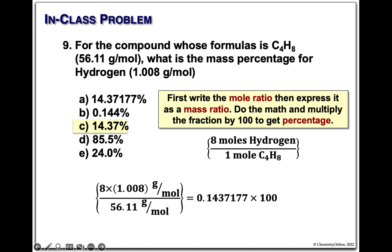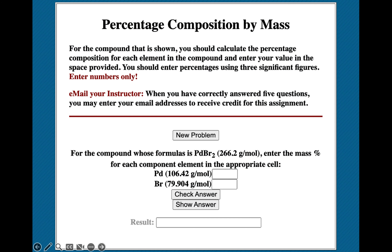This comes straight from the tutorial — composition by mass. For palladium bromide (PdBr2): palladium is a transition metal, bromine is a halogen, there are two of them with a minus 2 charge. The compound weighs 266. For the mass percent of palladium, there's one per mole — simply 106 divided by 266. For bromine, there are two of them: multiply 79.9 by 2, divide by 266, and we get about 60%.